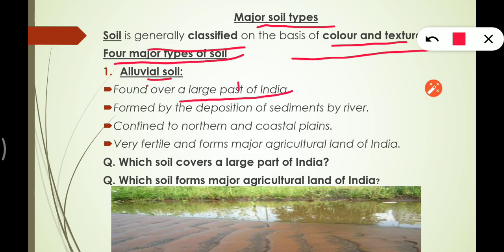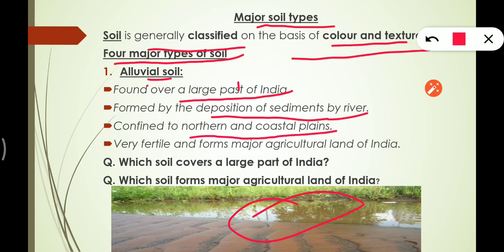Alluvial soil is found over a large part of India. It is formed by deposition of sediments by rivers — you can see rivers deposit sediments and form alluvial soil. It is confined to the northern and coastal plains and is very fertile, forming the major agricultural land of India.